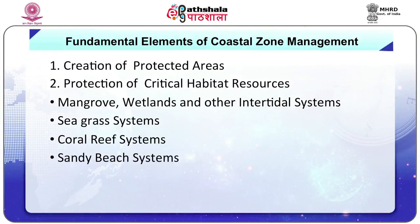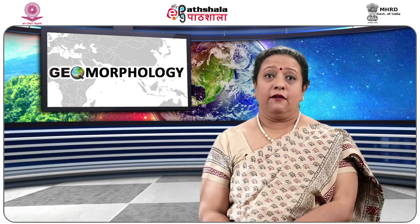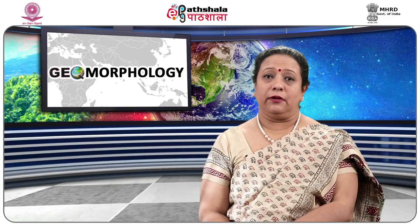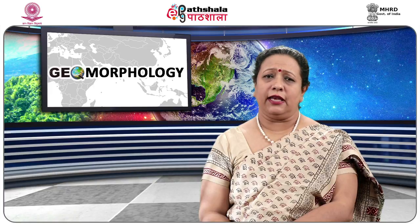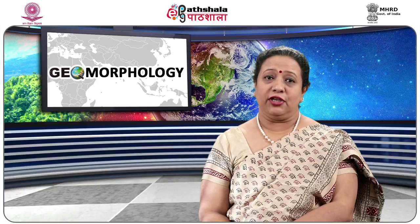Protection of critical habitat resources — mangroves, wetlands, and other intertidal systems: many millions of hectares of mangrove forest occur in the coastal areas of subtropical and tropical countries. Mangroves are found along indented coastlines where wave activity tends to be minimal. The term mangrove refers to any of dozens of species of trees capable of living in saltwater and salty soil regimes.